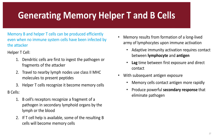Memory Helper T cells and B cells can be produced efficiently even when no immune system cells have been infected by an attacker. In Helper T cells, the dendritic cells are the first to ingest the pathogen or fragments of the attacker. They travel to nearby lymph nodes, use class 2 MHC molecules to present the peptides, and the Helper T recognizes it to then activate into memory cells.